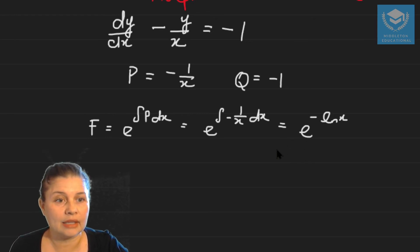That is the same as e to the ln x to the minus one which is the same as one over x. So all we've done is use the log laws in order to simplify the expression for F.